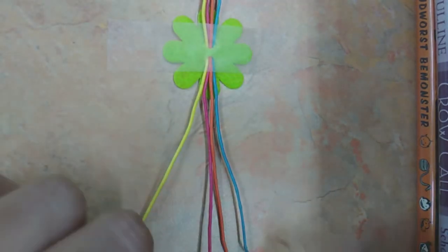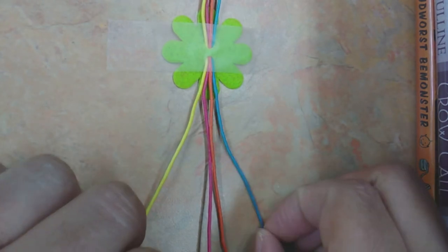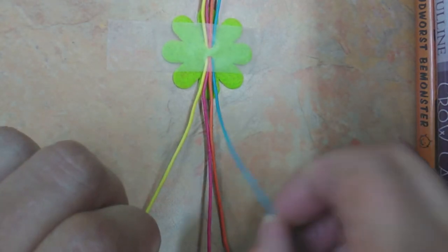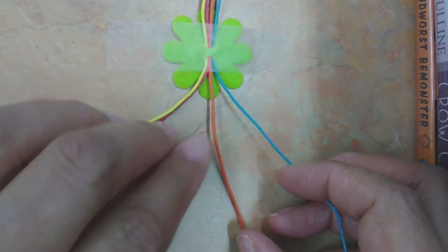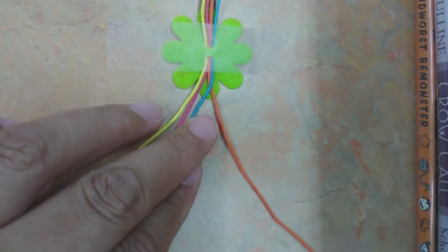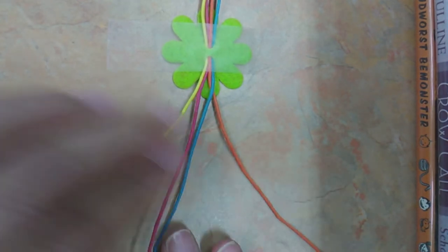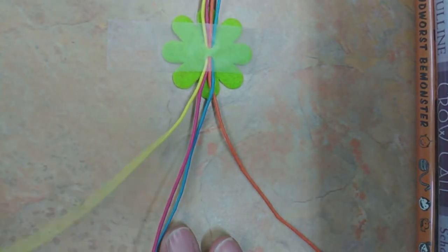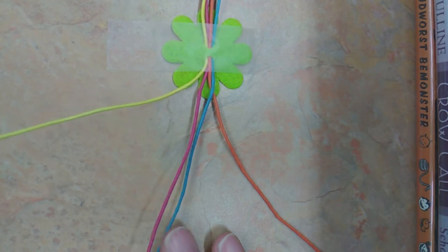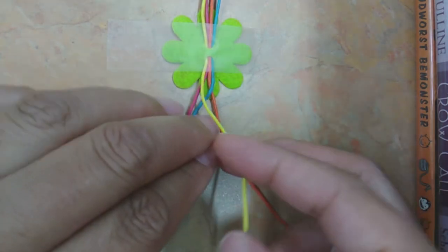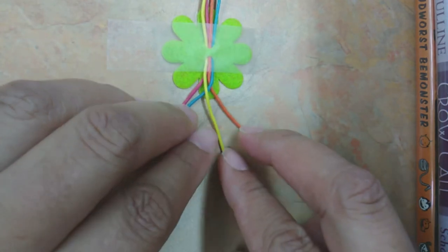We're going to start with the string on the farthest right-hand side and simply cross it over the string that it's closest to. Next, move to the string on the farthest left-hand side and cross it over the two strings that it's closest to.